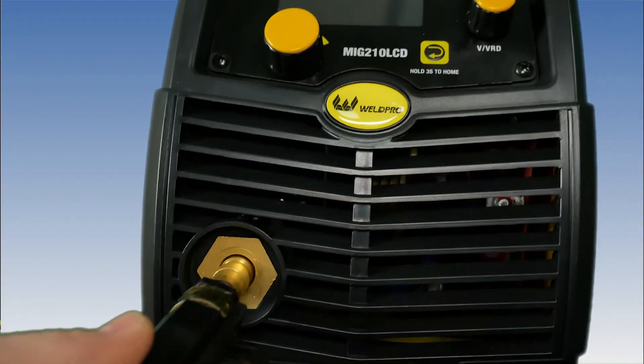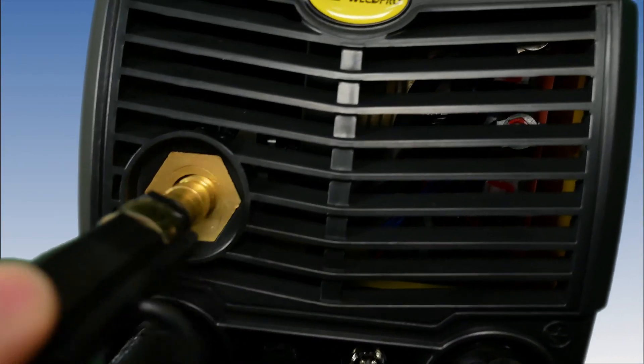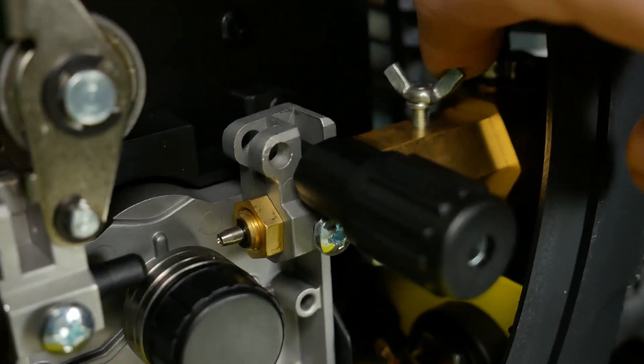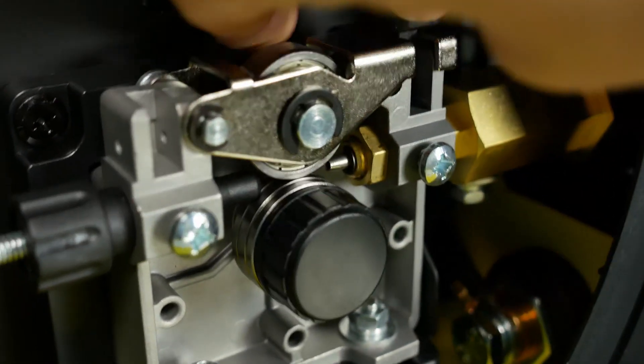Now that our bolt is loose, let's insert the spool gun connector into the front of the MiG-210 LCD. This should slide in very easily and if you have to force it, you may need to loosen that wing bolt just a hair more. Retighten that wing bolt now to ensure a secure connection to your spool gun.